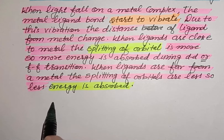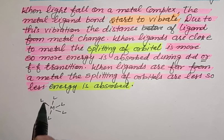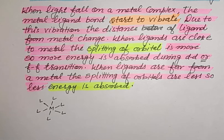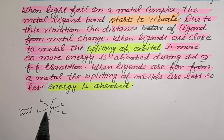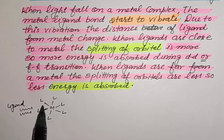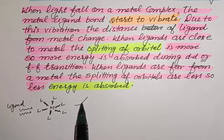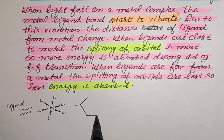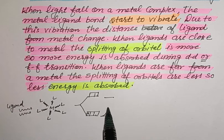When light falls on a metal complex, the metal-ligand bond starts to vibrate. Due to this vibration, the distance between the ligands and the metal increases and decreases. When the ligand is closer to the metal, the distance between the split orbitals is greater, so more energy is required by the electron for its transition.